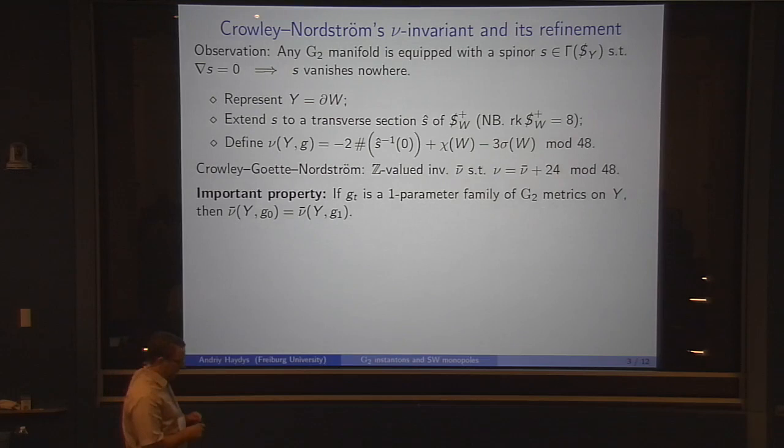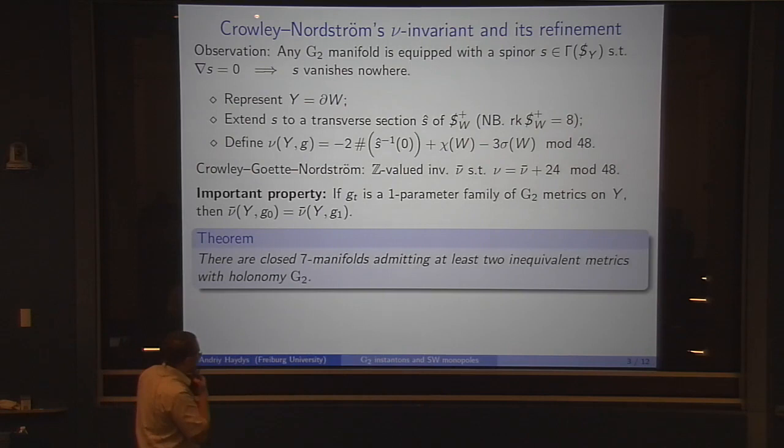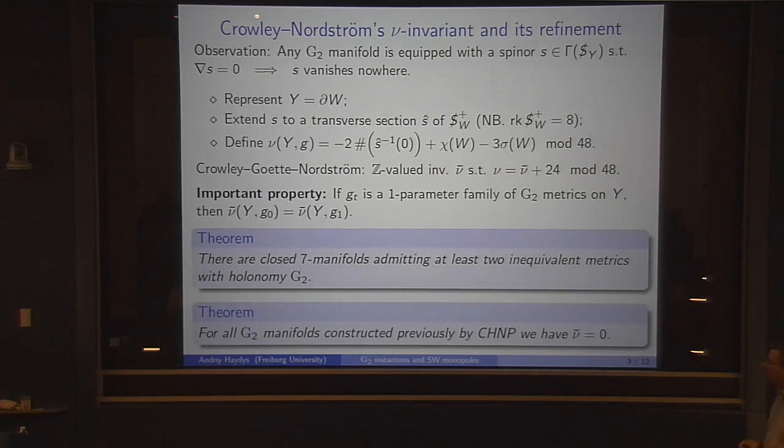Later, Crowley, Goette, and Nordström came up with an extension of that, an invariant nu bar, which is a Z-valued extension of nu. I would like to point out that this invariant has an important property: if you have a one-parameter family of G2 metrics on Y, then the nu bar invariant doesn't change its value along this family.